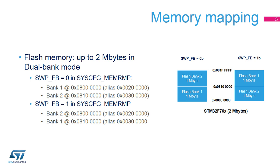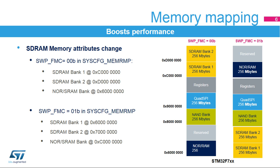For STM32F7 microcontrollers with the Dual Bank Flash feature, the FB mode bit determines the address mapping of Banks 1 and 2. The SWP-FMC bit in the System Configuration Remap Register allows remapping the FMC controller's SD-RAM Banks 1 and 2 to the NOR-RAM Bank Base Address, which allows changing the SD-RAM memory's attributes. When FMC Bank Swap is enabled, the NOR-RAM Bank is remapped to the SD-RAM Bank 1 address.